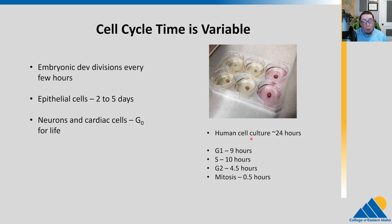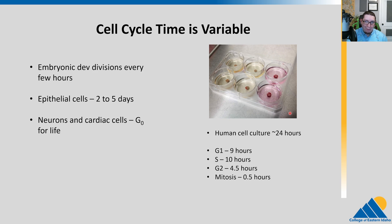In cell culture, when we put little bits of human tissue into cell culture, we're looking at division about every 24 hours. That might seem pretty quick, but when we compare that to bacteria, bacteria can divide every 20 minutes in some cases. So we're not quite as quick as them, but under ideal conditions, human cells will divide about every 24 hours.